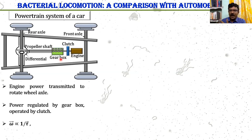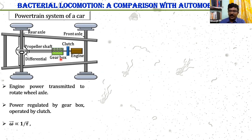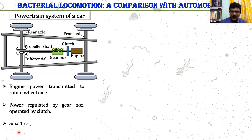At low gears, say first gear or second gear, the torque is high and angular velocity is low. Whereas in high gear mode, the angular velocity is high and torque is low. So angular velocity is inversely proportional to torque.